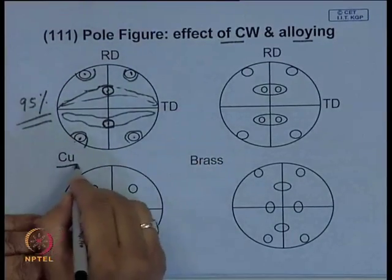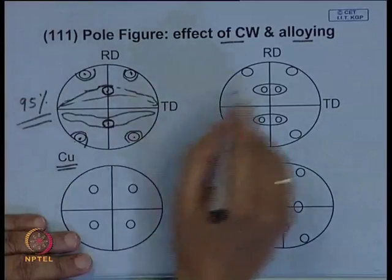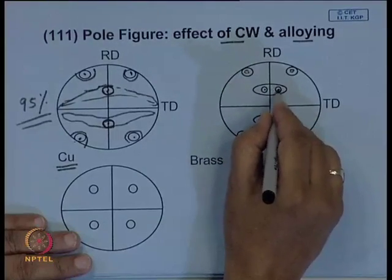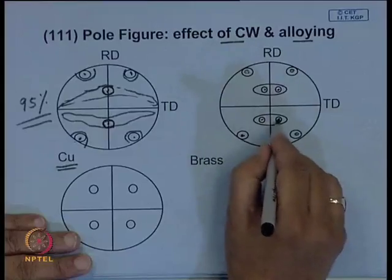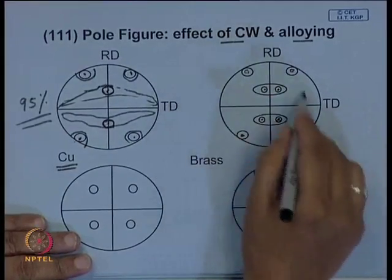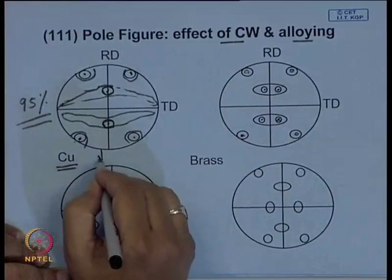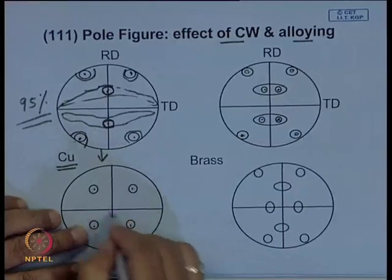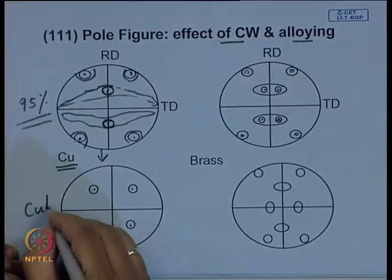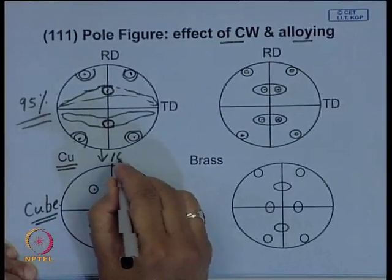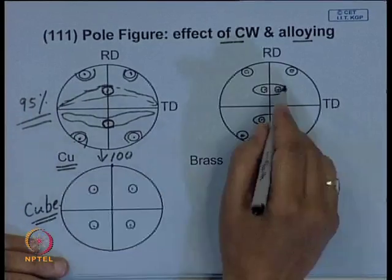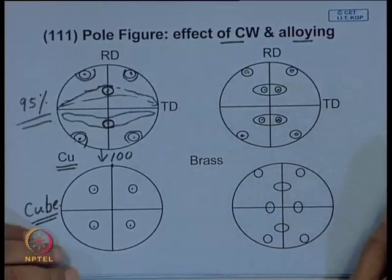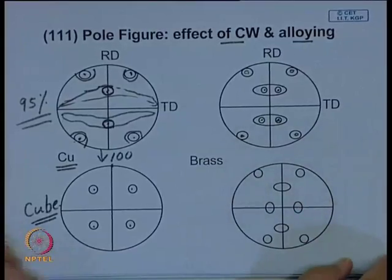Cold-worked copper produces a certain pole figure texture, while brass shows a different pattern due to its low stacking fault energy preventing cross-slip. When annealed, you can get a cube texture, where the rolling direction is aligned with the [100] direction. The exact appearance of pole figures should be checked in a textbook, as the schematics shown here are simplified illustrations.